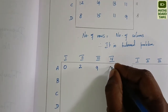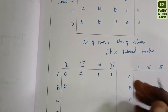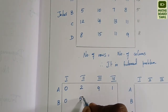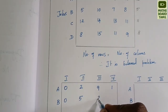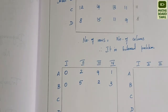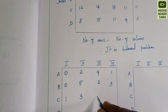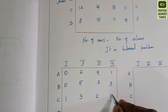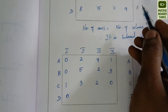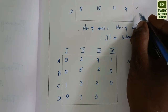Continuing row reduction. Row 3 minimum is 11: 12−11=1, 14−11=3, 13−11=2, 11−11=0. Row 4 minimum is 8: 8−8=0, 15−8=7, 11−8=3, 9−8=1.